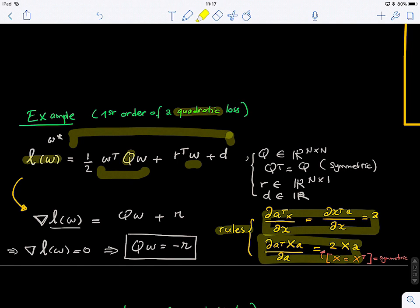The first one is the derivation of a vector a transpose times x with respect to x, which gives us a. And if we have this quadratic form, the derivation with respect to a gives us 2xa if x is symmetric.